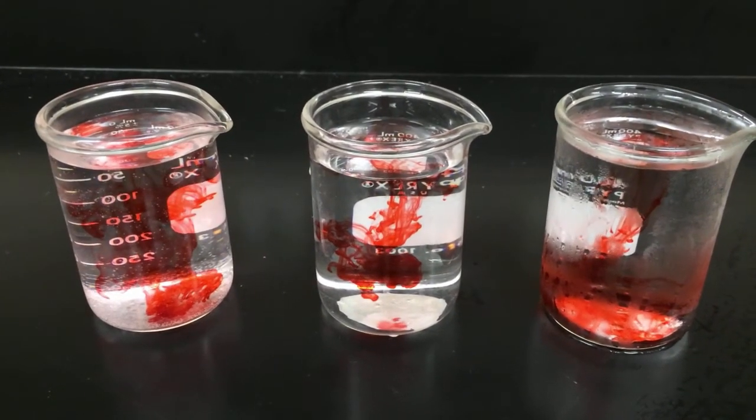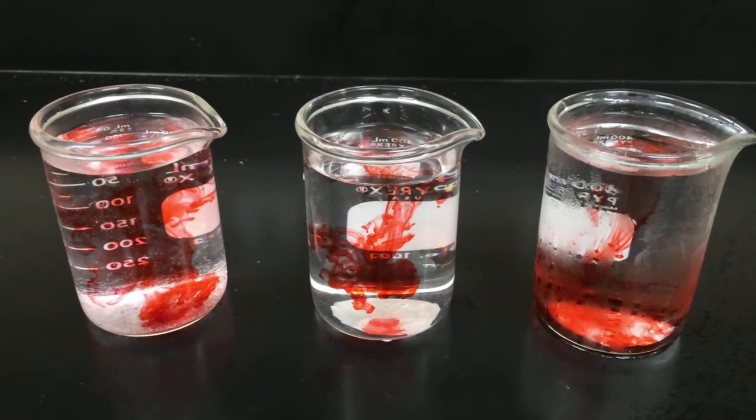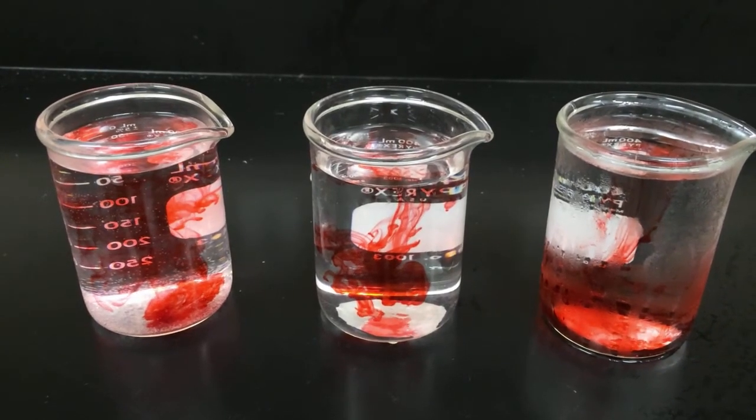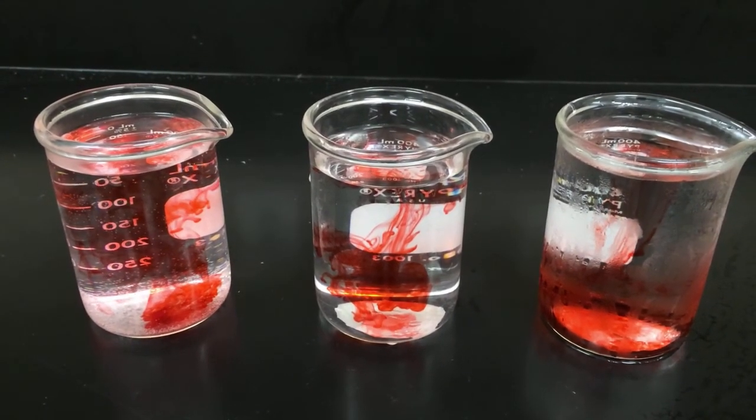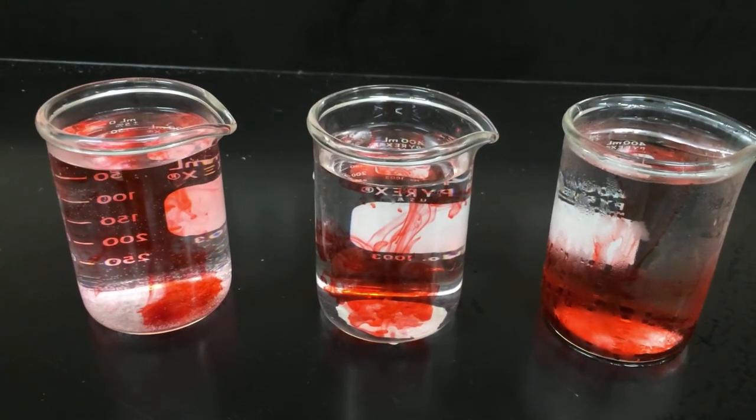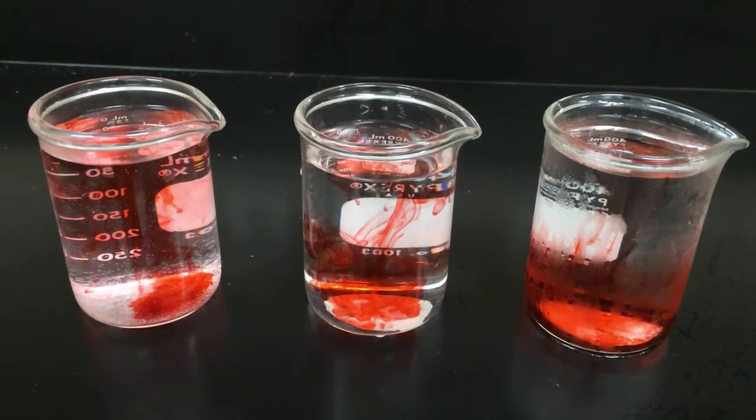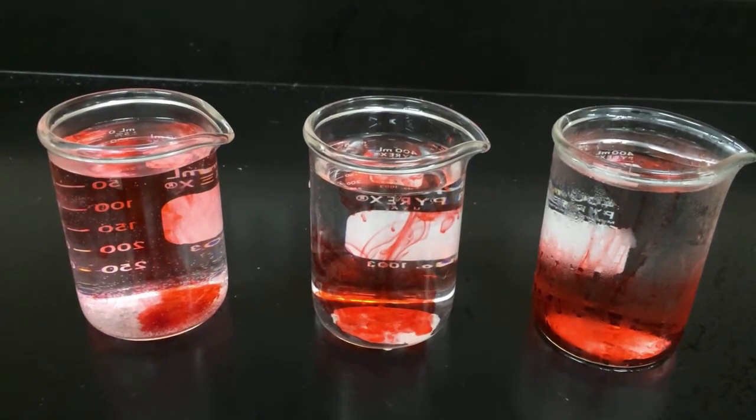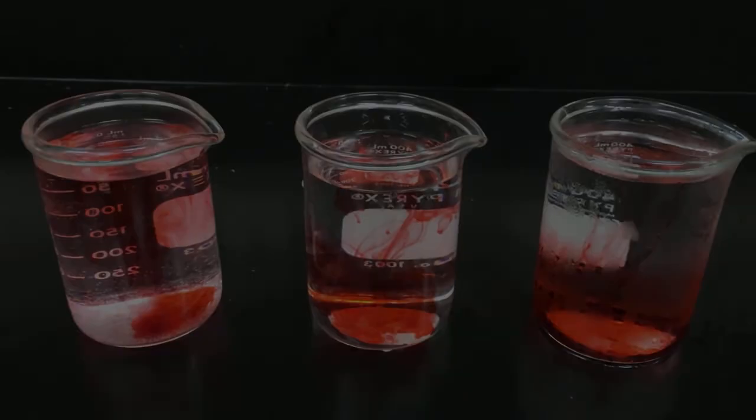So you can see the cold water drops right to the bottom. The room temperature starts spreading out kind of throughout. And the hot water, or the warm water, seems to have the red dye spread out the fastest. And that's because heat energy causes more motion, and the lack of heat energy causes less motion.